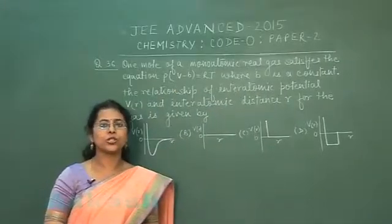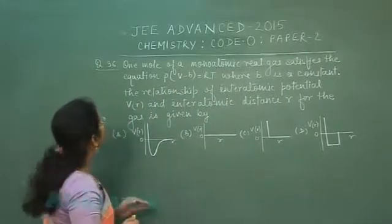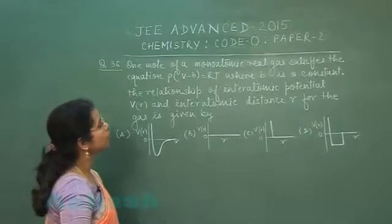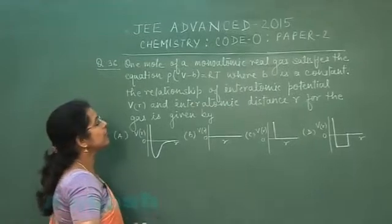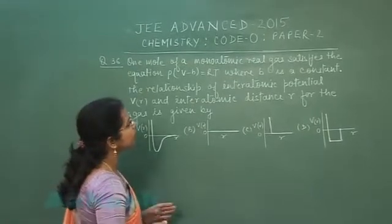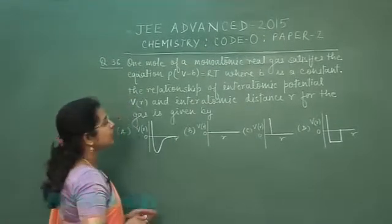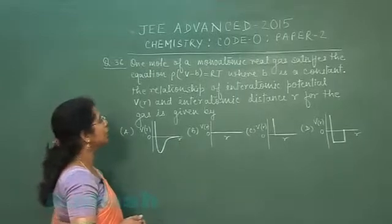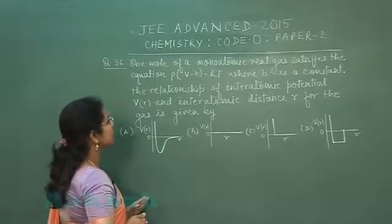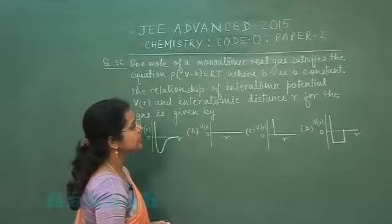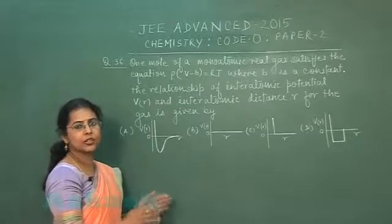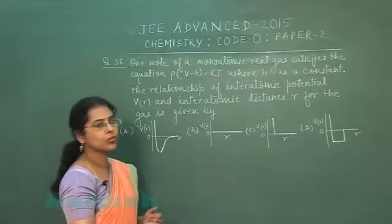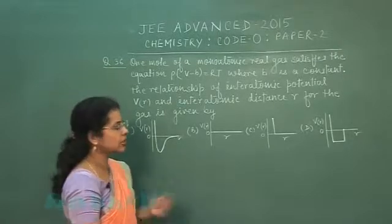So next question is question number 36. One mole of a monoatomic real gas satisfies the equation PV minus V equals RT where V is a constant. The relationship of interatomic potential V and interatomic distance R for the gas is given by four options in the form of graphs and we have to select which one is the correct graph.